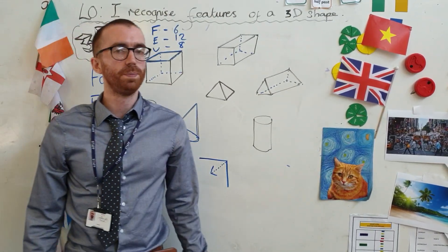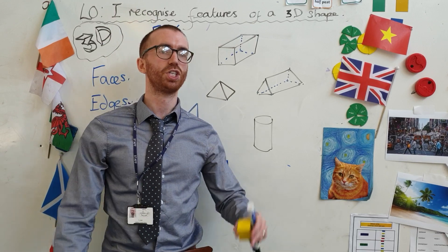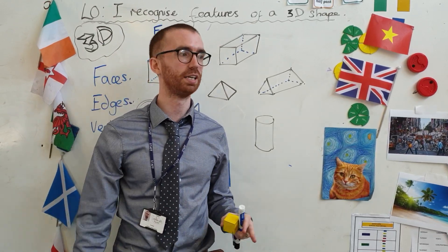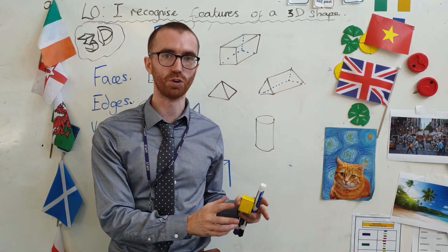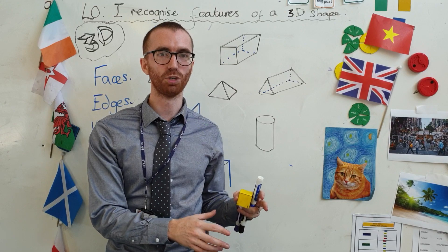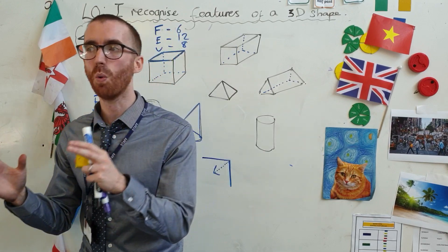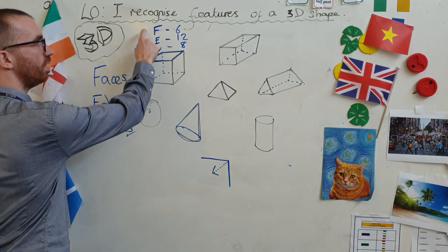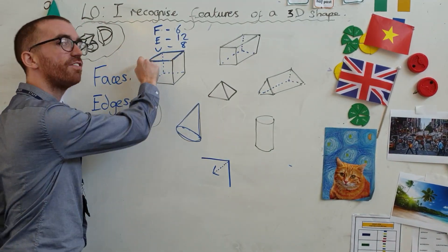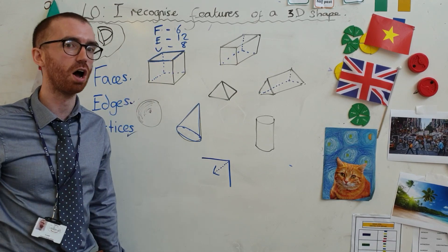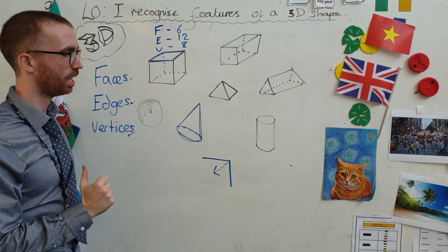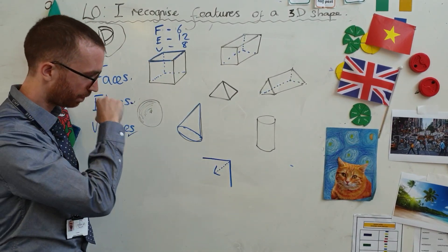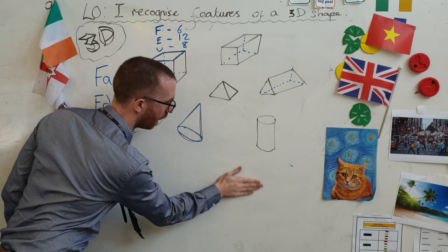As part of your homework, I want you to go around the house — there are going to be loads of 3D objects. I'd like a photo of a 3D object; I want you to name what it is, and tell me how many faces, edges, and vertices it has. Email that over to me, and if you have any problems, just email me and ask.